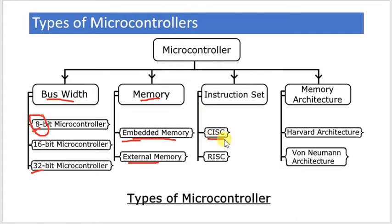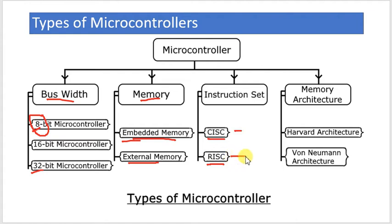We can also categorize microcontrollers based on the instruction set they support. There are two types of instruction sets available universally: CISC and RISC. The full form of CISC is Complex Instruction Set Computer, and RISC is Reduced Instruction Set Computer. One of these instruction sets will be used by a microcontroller, and both have their pros and cons. We will discuss these in detail during another session.